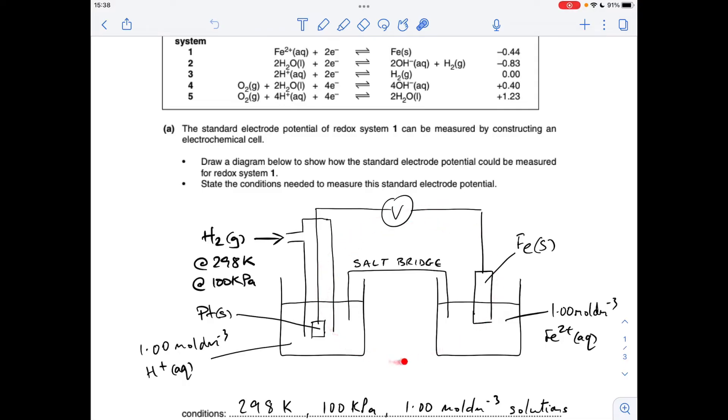Okay, so there's the diagram you would need to draw for part A. The conditions are 298 Kelvin, 100 kilopascals, and one molar per decimeter cubed solutions. Just make sure that your salt bridge is definitely going into the solutions.